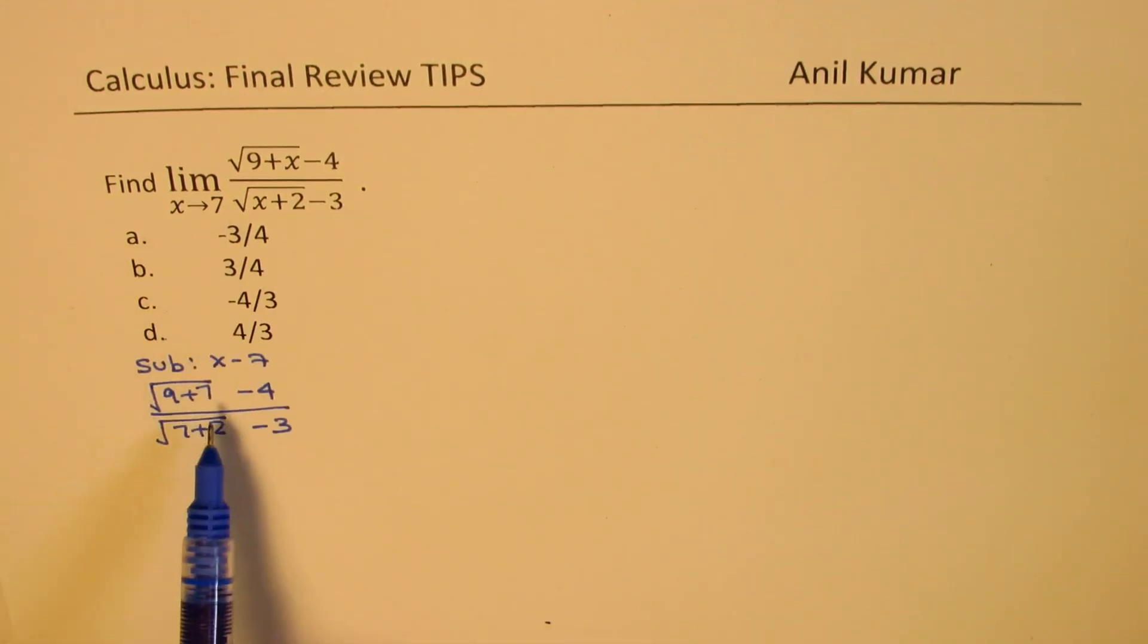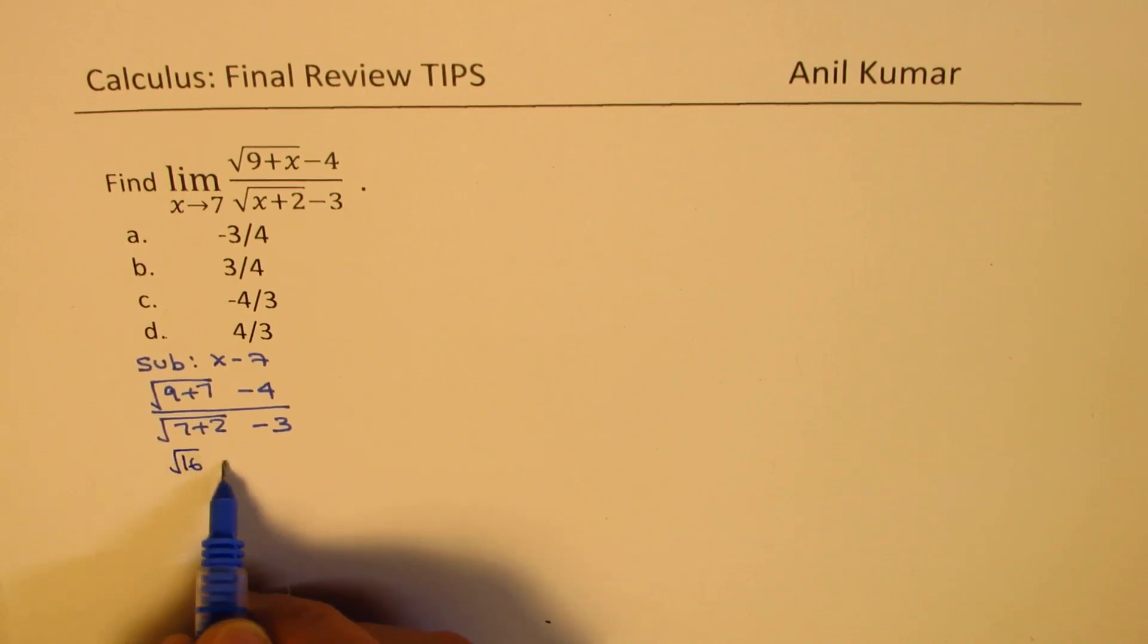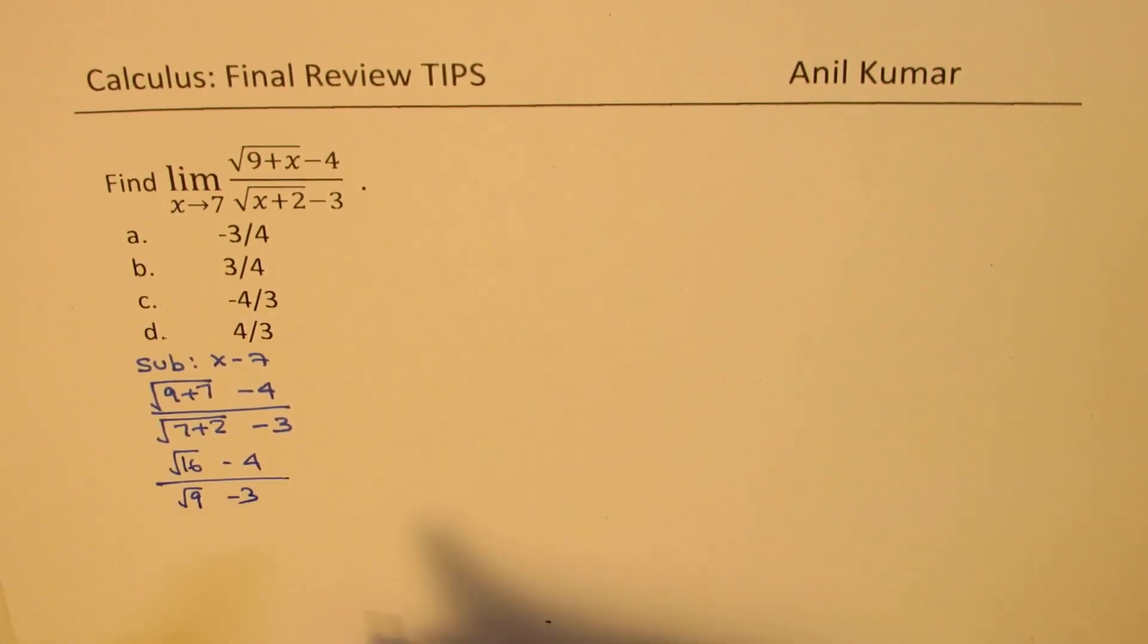If we substitute 7 here, what do we get? We get 9 plus 7 is 16 square root minus 4 over 7 plus 2 is 9 square root minus 3, and that is 4 minus 4 over 3 minus 3, and that is 0.